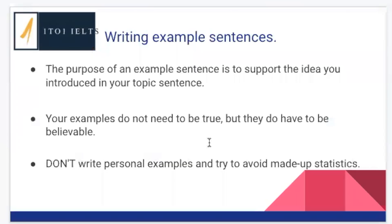When we write example sentences, we're going to think about what is the purpose. Remember, we're trying to support the idea that was in your topic sentence. Your examples do not need to be true, so you can make them up if you want, but they do have to be believable. This is a problem that a lot of people have — they make up examples and they're not very believable.